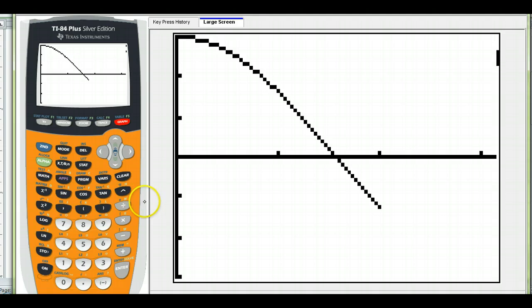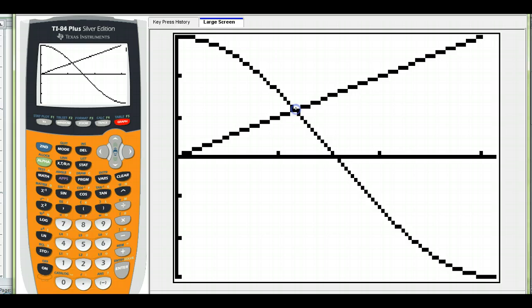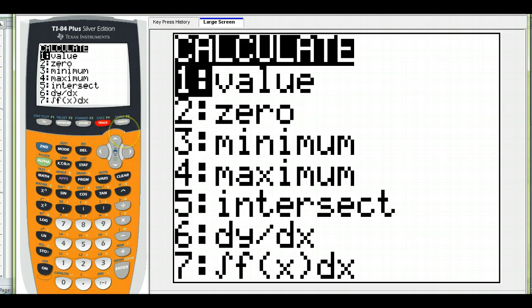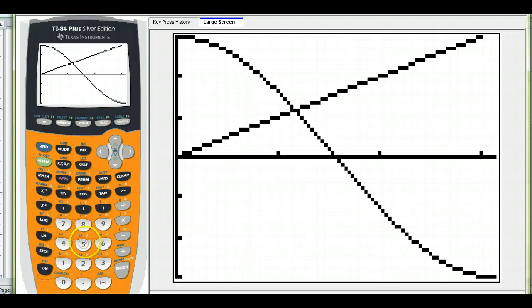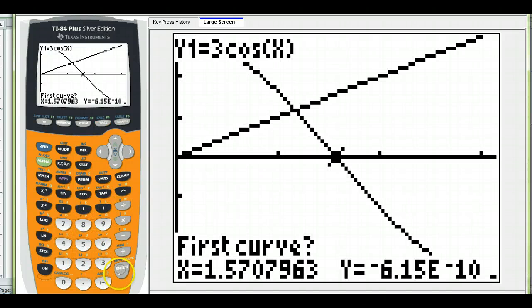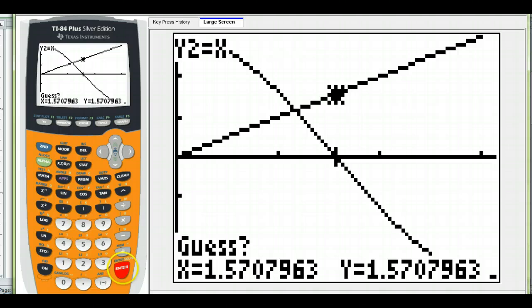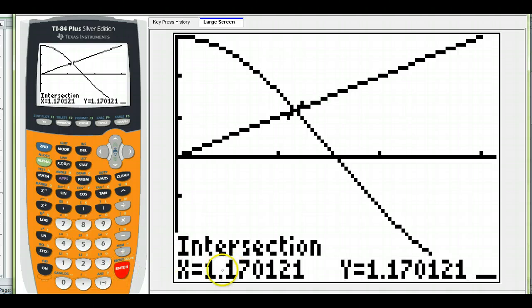Here we go. Okay? And we want this point right here. We want this point. So it's second calc, and it's intersect, 5, and that's the first curve, yes, and that's the second, yes, and I'm not guessing. So 1.7011, you see right here this section? You've got to circle that. 1, 7, 0, 1, 2, 1.